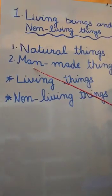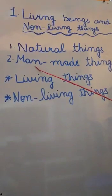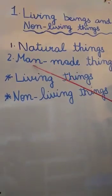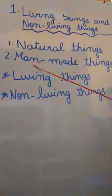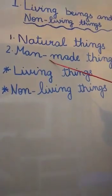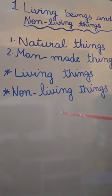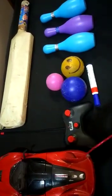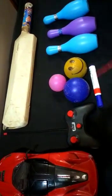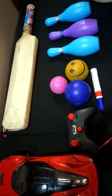Our next point is man-made things. You know what are man-made things? The things made by humans are called man-made things. Here I have several examples of man-made things. Take a look. Man-made things are toys, containers, furniture. These all are man-made things.